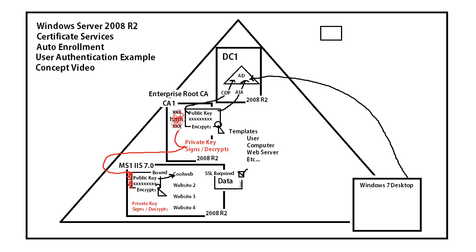The example of going through the security line is probably better because they use that little light to look at your driver's license so they can see the seal from the state — to make sure it's a valid license and not some kind of a fake ID. So, we're going to require this user sitting at a Windows 7 desktop to have a certificate. Not the computer, but the user — though that user's certificate will be stored on that computer because there are different types of certificates we can issue.